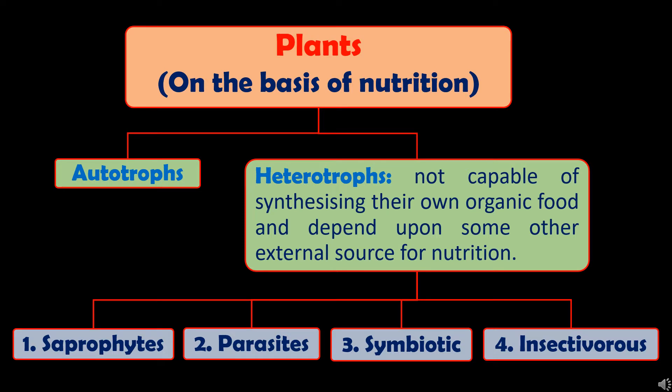But there are some other plants which are not capable of synthesizing their own organic food and depend upon some other external sources fully or partially for nutrition. Such plants are called heterotrophs. So on the basis of nutrition, plants are categorized as autotrophs and heterotrophs.